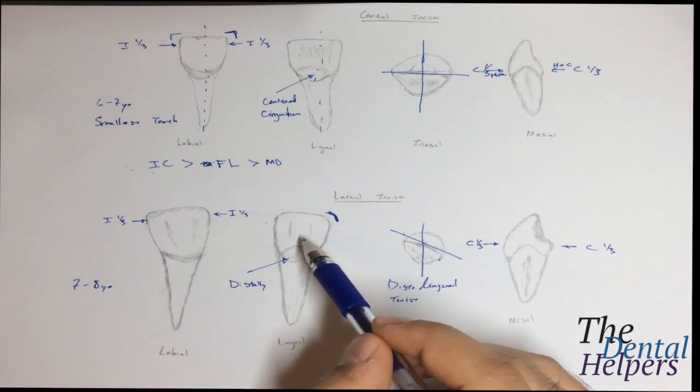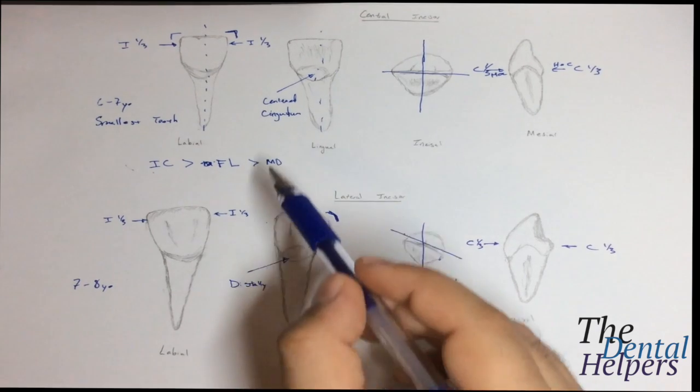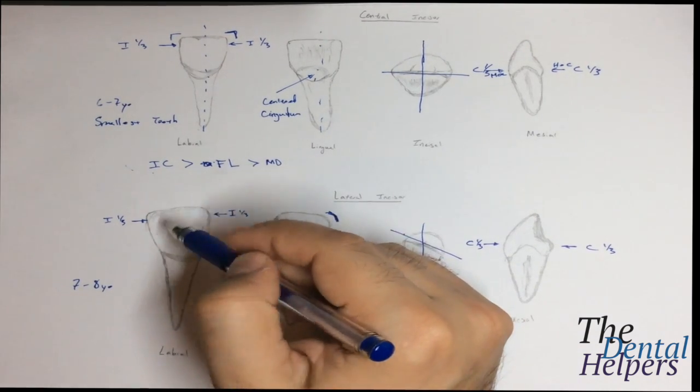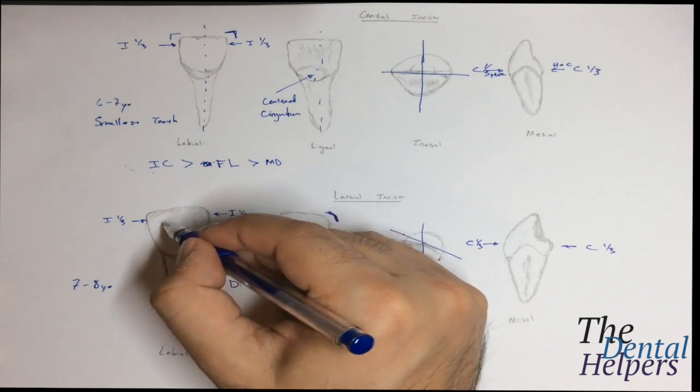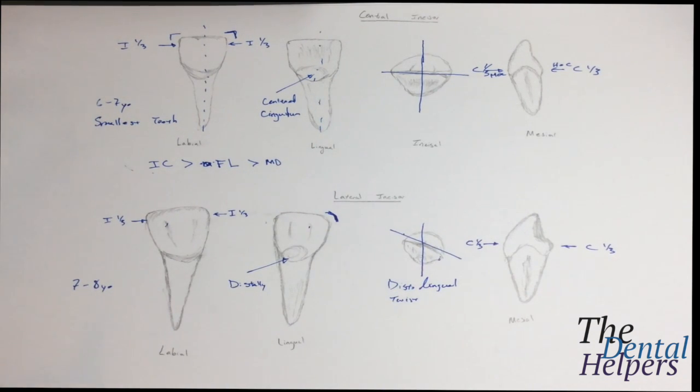Now if we were to compare the lingual fossa, the lingual fossa is going to be a lot more deeper on the mandibular lateral incisor compared to the central incisor. And then on the labial surface, I've drawn out that there are going to be two depressions that are present. And when you're looking at the tooth, you're going to see that it's kind of like this very light depression. So you're going to have to look carefully. And that is basically it for the mandibular incisor.